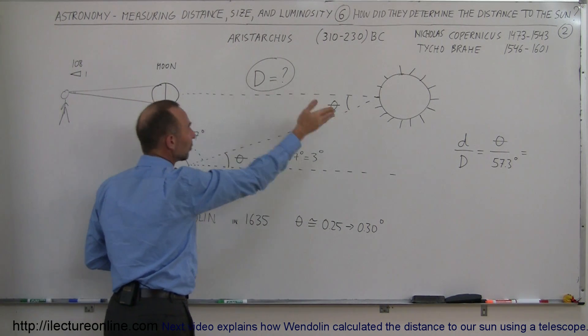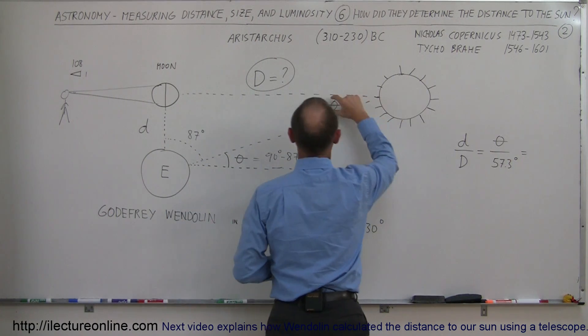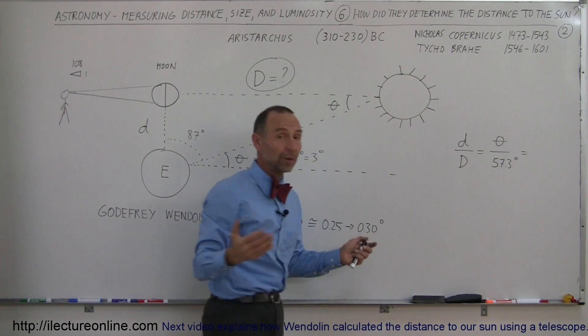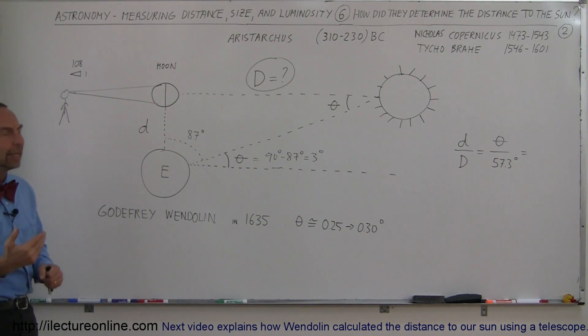And you could then say that the distance d between the Earth and the moon and the distance d between the Earth and the sun, that ratio had to be equal to the angle right here divided by 57.3, which is the number of degrees in a radian. And that ended up being 1 in 20.